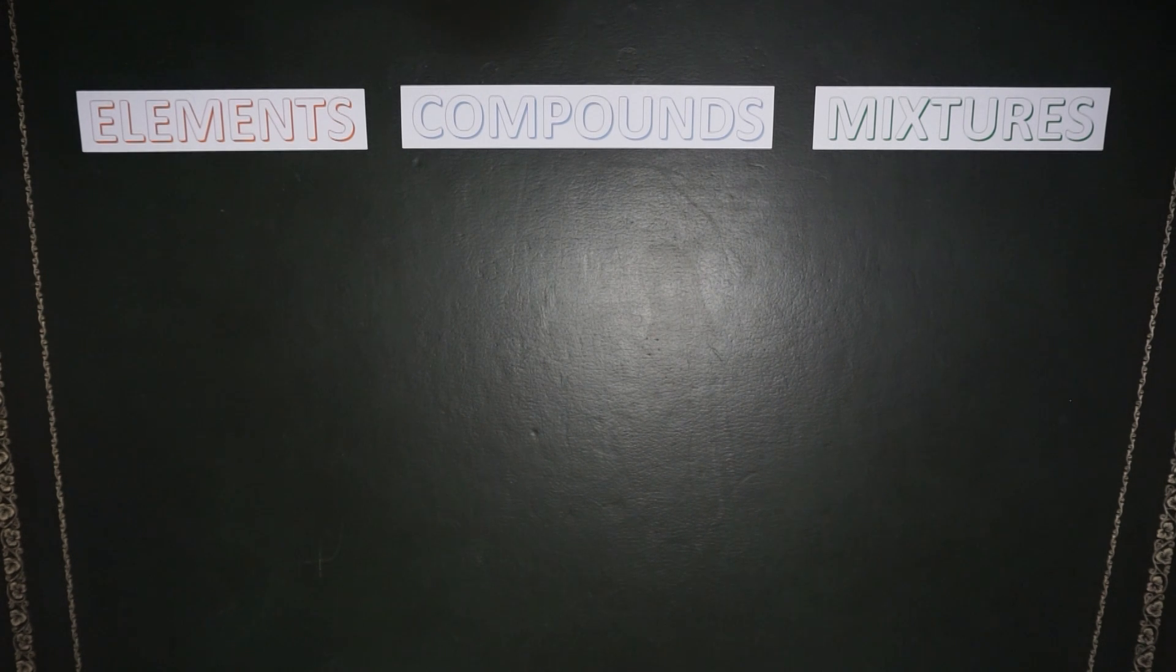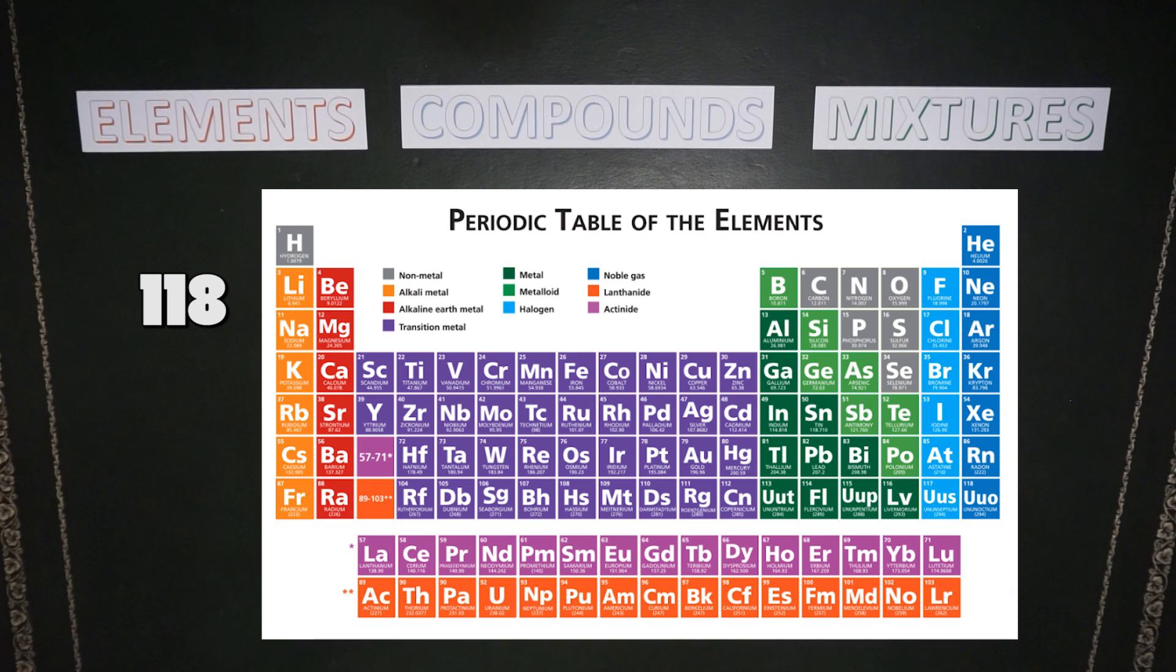Everything around us is made up of atoms and there are 118 different types of atoms that we call the elements. You can represent all of the elements on a big table which we call the periodic table of elements.